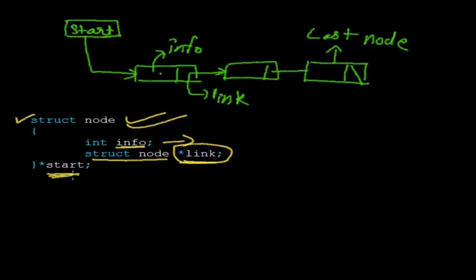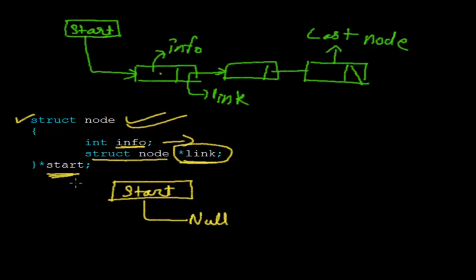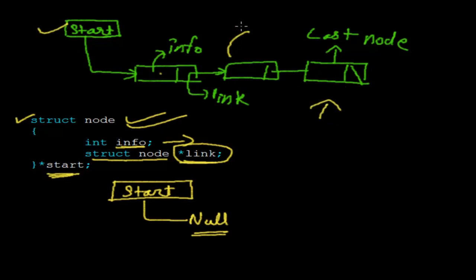The node which points to the first node is called the start node. This linked list can be represented programmatically with a structure. The structure has an info part to store the node's data, and a link part declared as struct node star link, which stores the address of the next node. The global variable 'start' will always point to the first node.